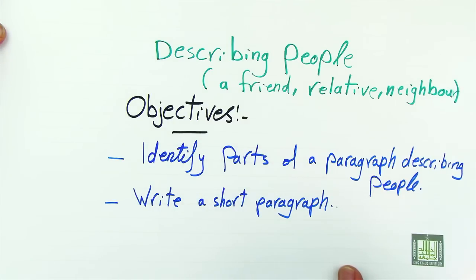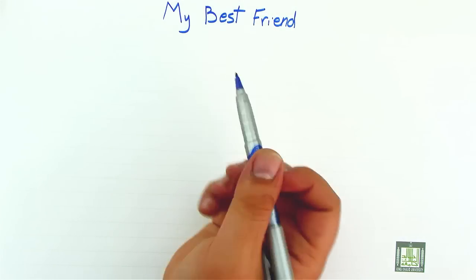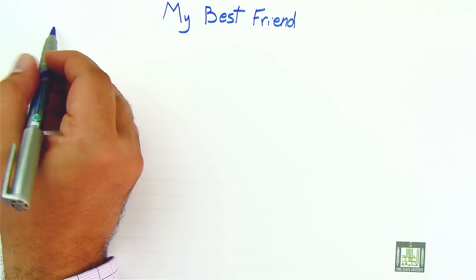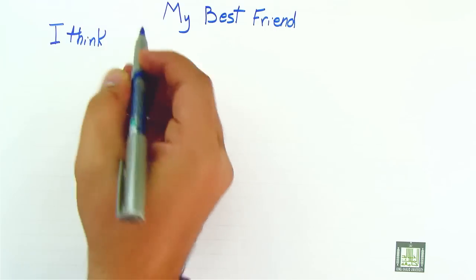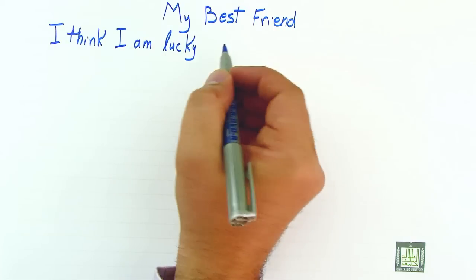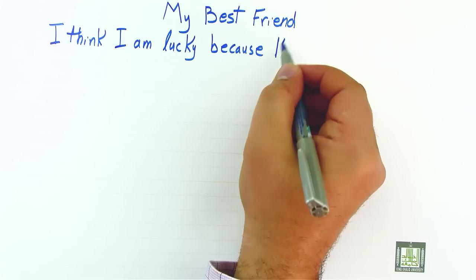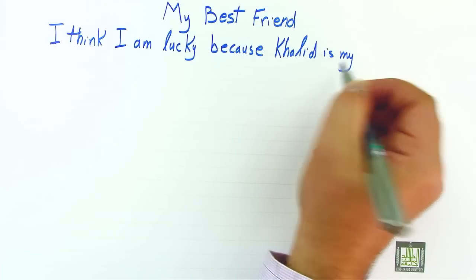Now we will start describing a friend of ours. So now we are going to write a paragraph describing my best friend. I leave an indentation space and start: I think I am lucky because Khalid is my friend.